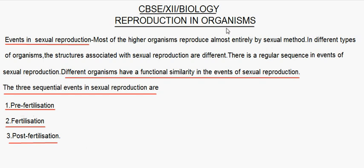Reproduction in Organisms: Events in Sexual Reproduction. Most of the higher organisms reproduce almost entirely by the sexual method. In different types of organisms, the structures associated with sexual reproduction are different. There is a regular sequence in the events of sexual reproduction, and different organisms have a functional similarity in these events. The three sequential events in sexual reproduction are pre-fertilization, fertilization, and post-fertilization.